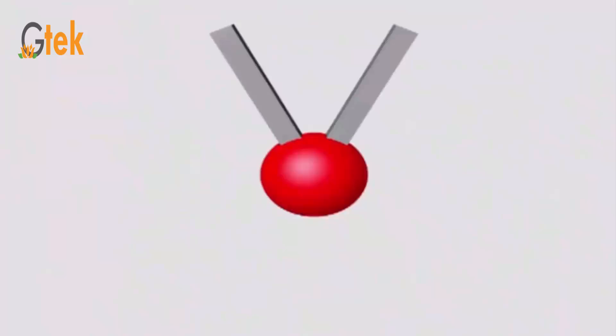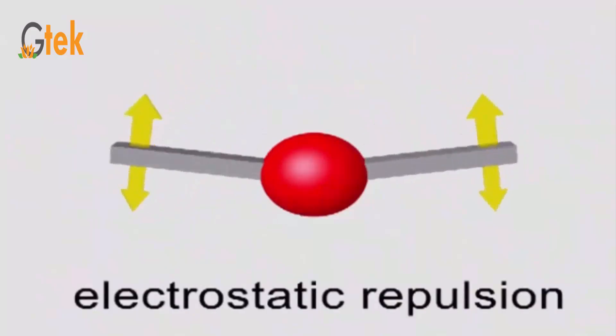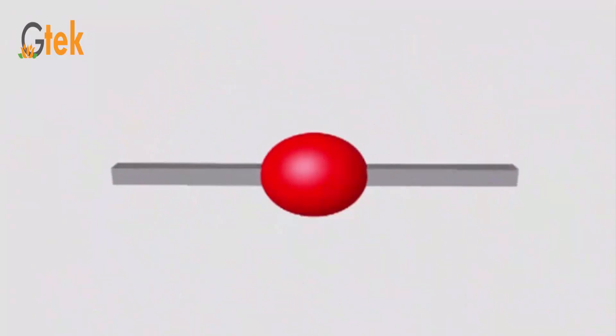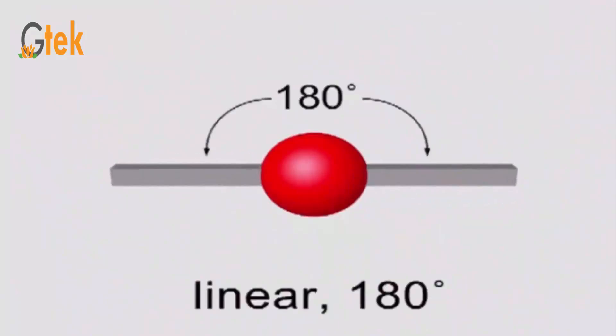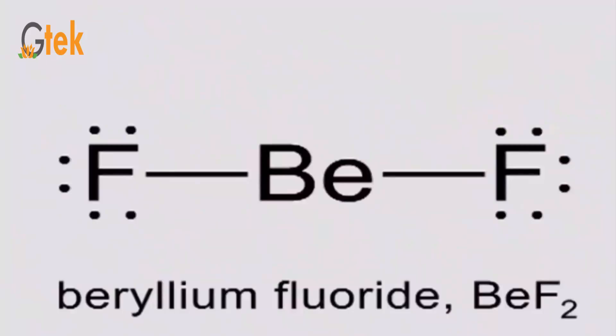Now we will talk about valence shell electron pair repulsion theory — VSEPR. VSEPR theory indicates how chemical bonding and the electron configuration determine the structure formed. It works through electrostatic repulsion.